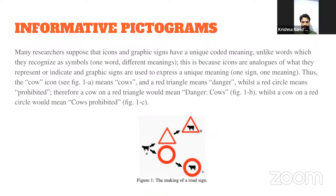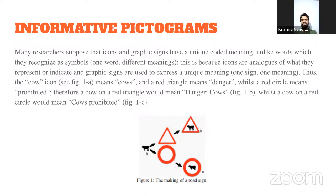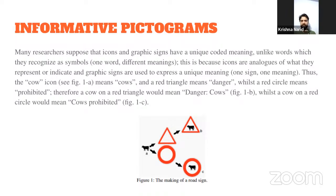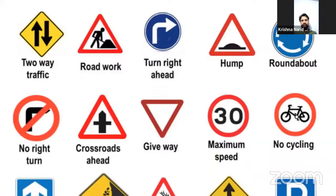The instructor shows a figure and asks students if they can relate it to a road sign. Sarah says it looks like signs seen when crossing a forest road. The instructor confirms this and emphasizes relating learning to practical examples. He asks students if they have noticed zebra crossings near schools and colleges, and both Sarah and Bindu confirm they see them regularly on roads.